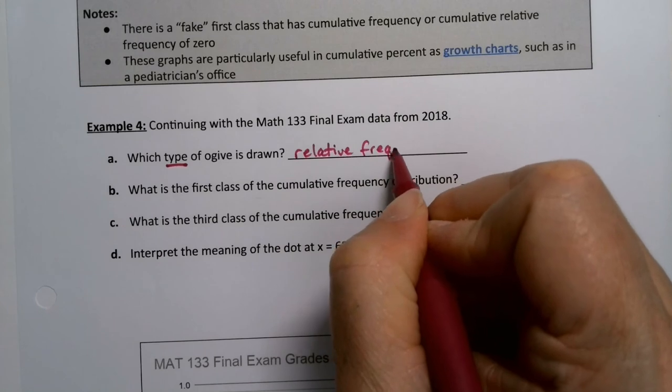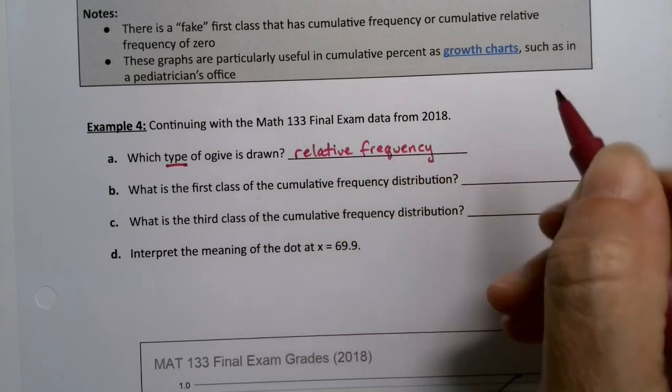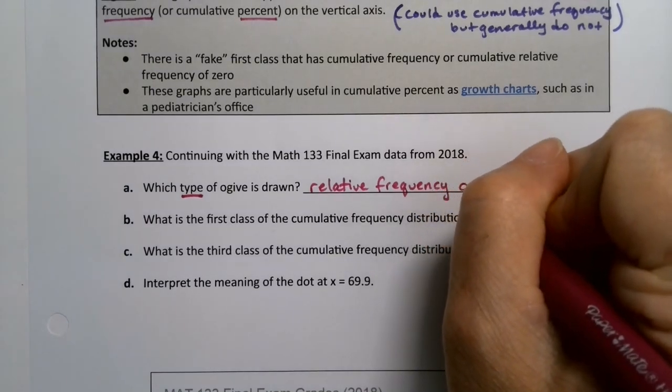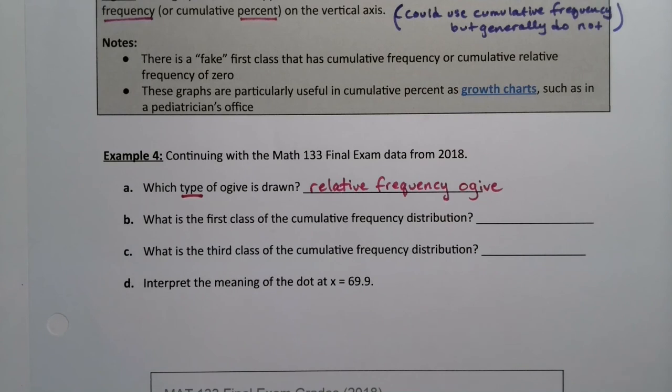As opposed to if it was whole numbers, it would be a frequency ogive, which again, we generally don't use very often, but it might show up every once in a while.